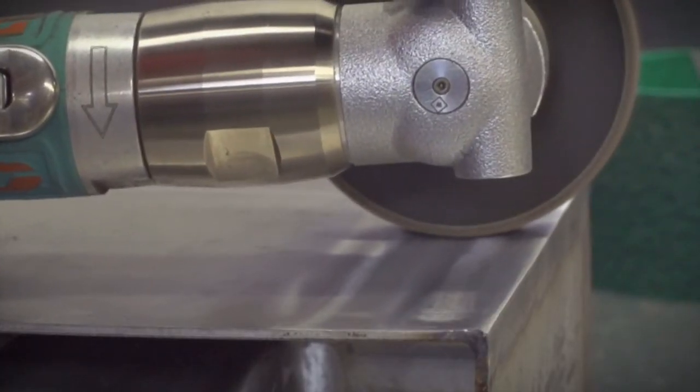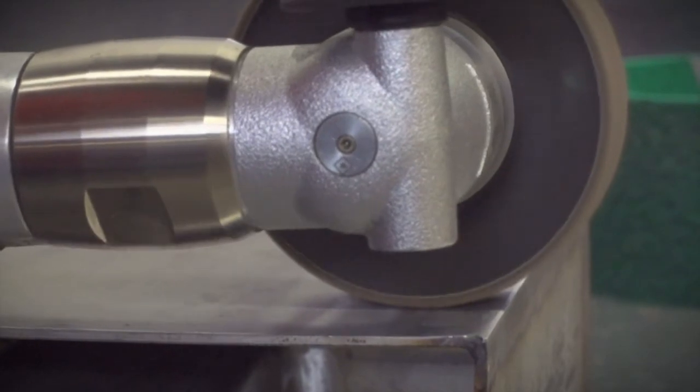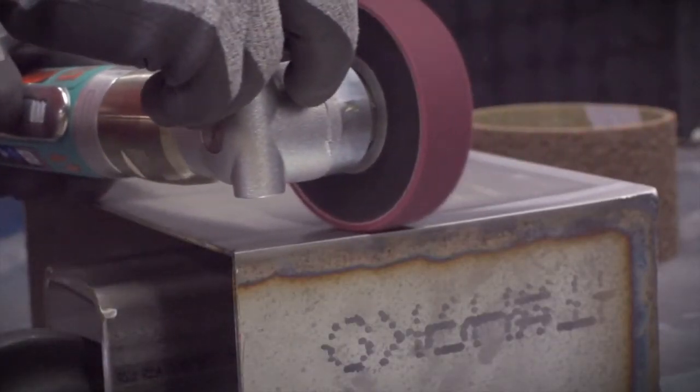The finishing process begins with the coarse belt, blending the corners of the welded plates, then onto the medium belt, the fine, and the very fine.